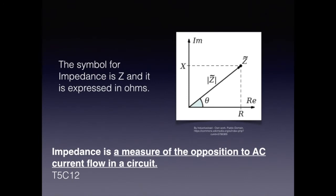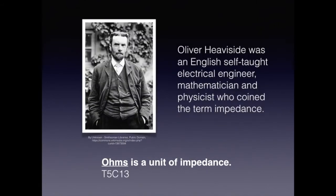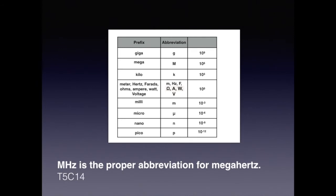Impedance is the opposition to electric current in a circuit. It applies specifically to alternating current. It is also important because the feed line needs to be the same impedance as your transmitter output as well as the input to your antenna. For the exam, know that impedance is a measure of the opposition to AC current flow in a circuit. It was Oliver Heaviside who coined the term impedance. Remember for the exam that ohms is the unit of impedance. It is important to use proper abbreviations in the metric system. For example, capital M, capital H, lowercase z is the proper abbreviation for megahertz.